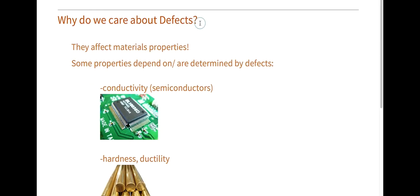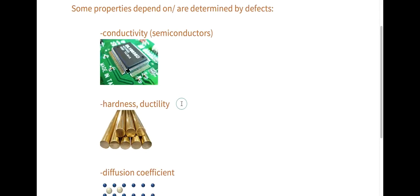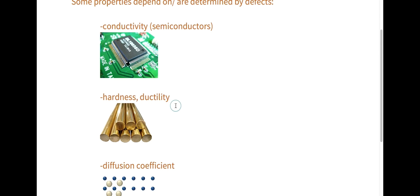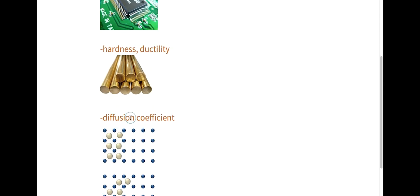So why do we care about defects? It turns out that they really do affect material properties. Some properties depend heavily on defects, and those include conductivity, especially in semiconductors, hardness and ductility in metals like brass, and diffusion coefficients of materials.